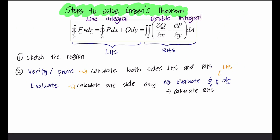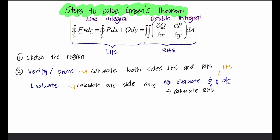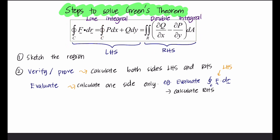To solve Green's Theorem, first you must sketch the region. Then refer to the question. If the question asks you to verify or to prove Green's Theorem, then you must calculate both sides of the equation — both the left-hand side and the right-hand side. If the question asks you to evaluate, you can calculate one side only. For example, if asked to evaluate the line integral, you must show the right-hand side. If given the right-hand side, you must show the left-hand side.